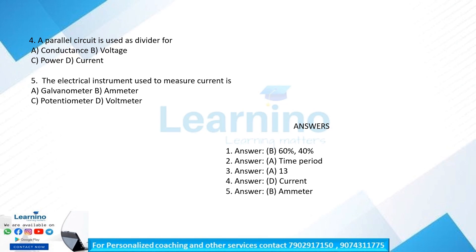Question 5: the electrical instrument used to measure current is — option B: ammeter. An ammeter is used to measure current. These questions related to soldering working temperature, composition, and flux are very important exam topics. Soldering flux related questions are commonly repeated. Thank you.